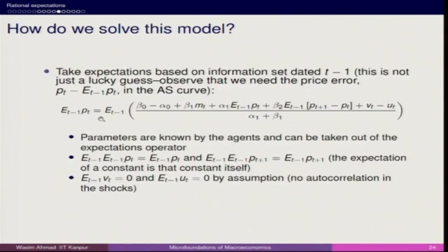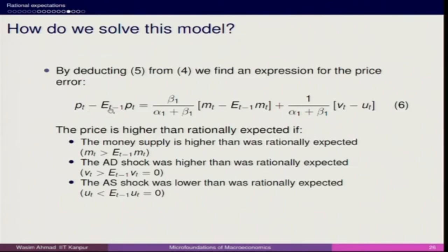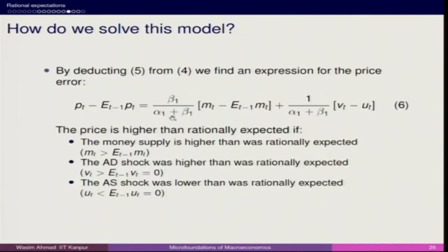Once we bring the expectation operator inside, all error terms become 0. This gives us the expected price level. Subtracting E[t-1]Pt from Pt then yields: Pt minus E[t-1]Pt = (beta 1 / (alpha 1 + beta 1)) times (Mt minus E[t-1]Mt), plus (1 / (alpha 1 + beta 1)) times the error term difference. These random term differences are very meaningful in macroeconomics — positive differences will cause the model to deviate from its objective. Price is higher than rationally expected when Vt > E[t-1]Vt or when ut is less than expected.